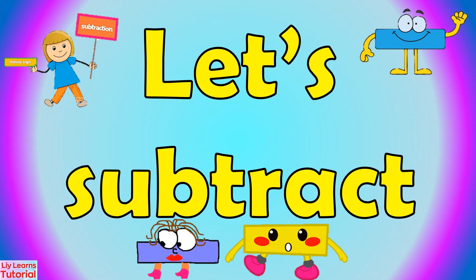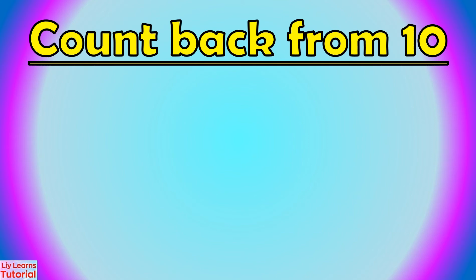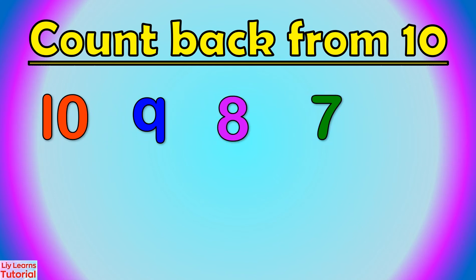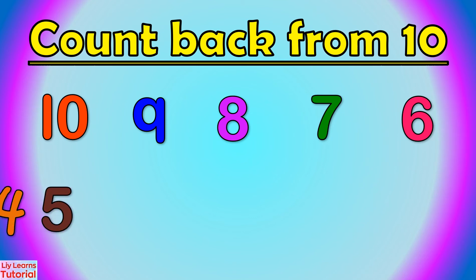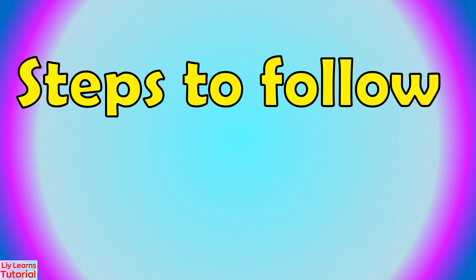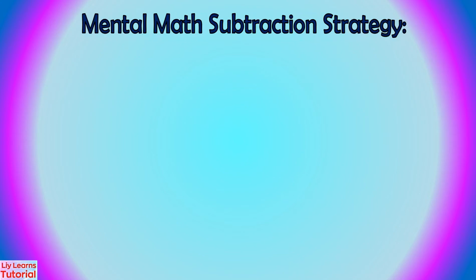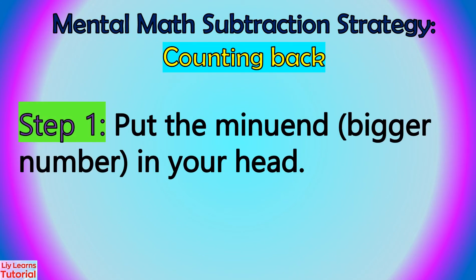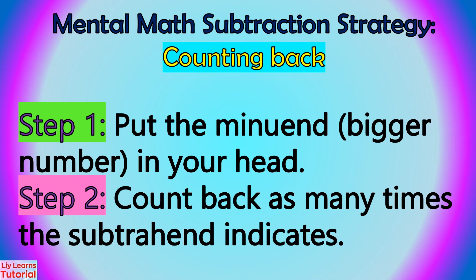Now that we know the parts of a subtraction number sentence, let's subtract by counting back. Let's count back from 10: 10, 9, 8, 7, 6, 5, 4, 3, 2, 1. Here are the steps to follow in subtraction by counting back. Step 1: Put the minuend or bigger number in your head. Step 2: Count back as many times as the subtrahend indicates.